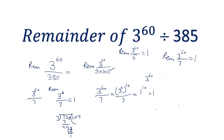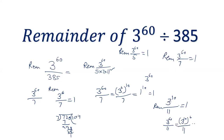Now finally let's check by 11. Since 11 is a prime number, 3 power 10 divided by 11 will give the remainder as 1. So 3 power 60 can be written as 3 power 10 into 6, and since 3 power 10 gives remainder 1, the answer comes out to be 1 power 6, which is 1. So the remainder of 3 power 60 divided by 11 is 1.